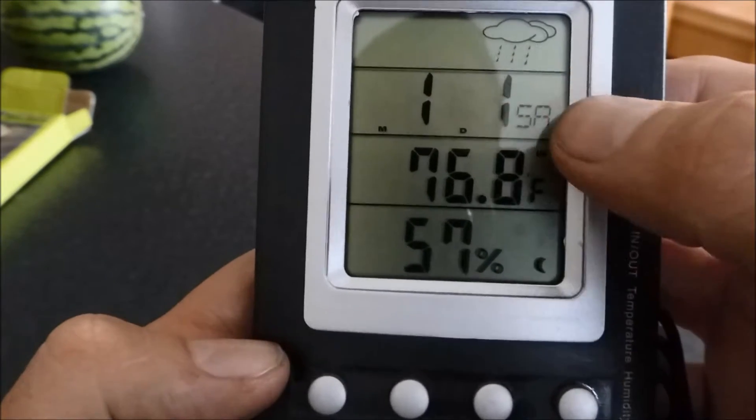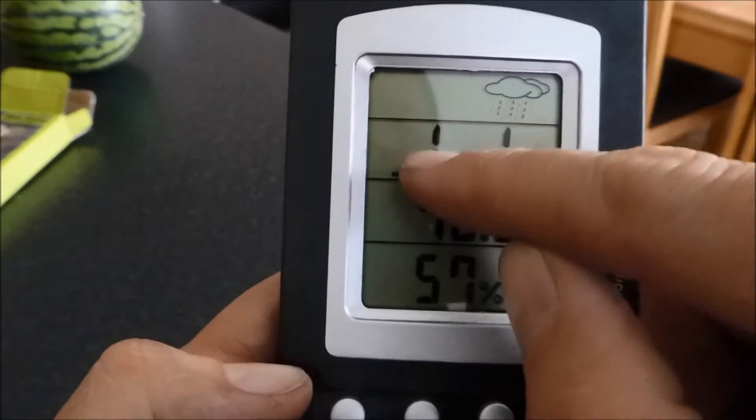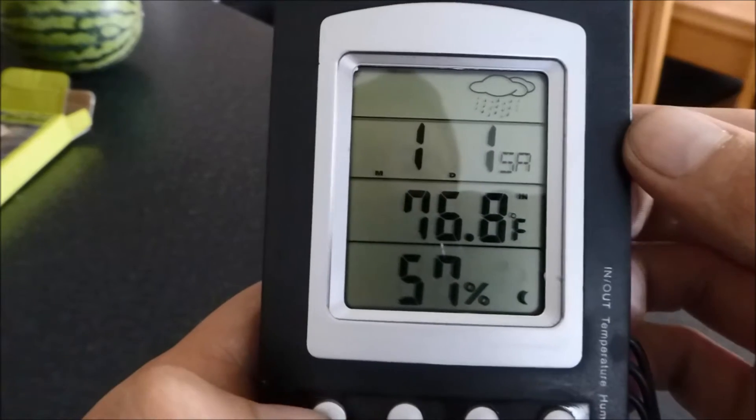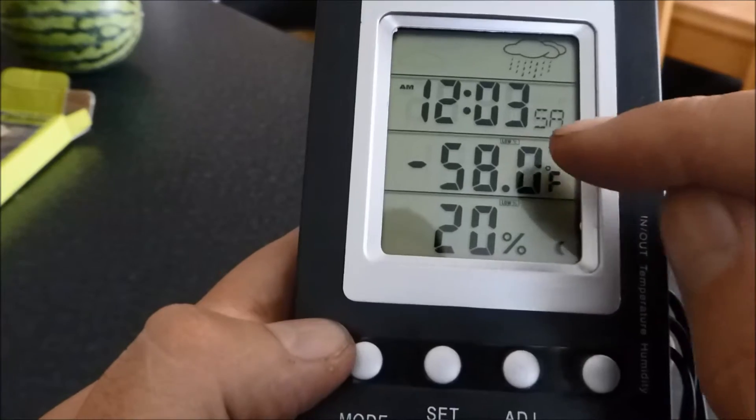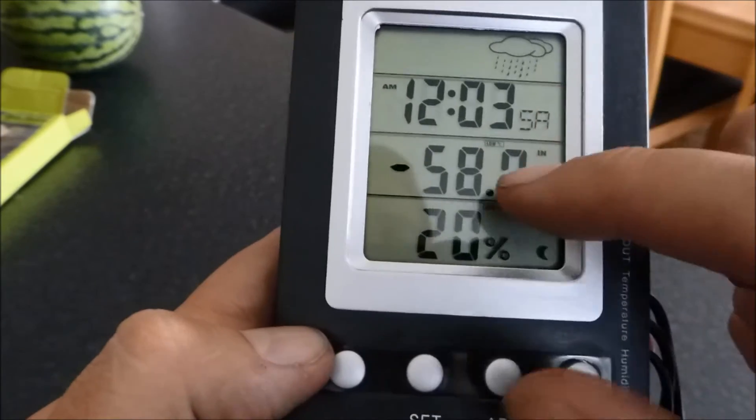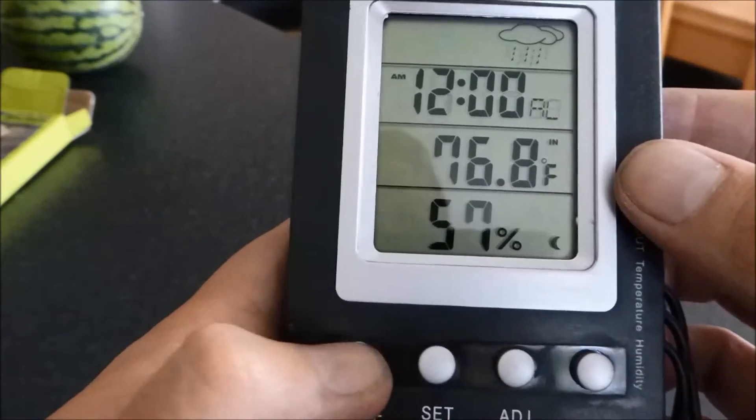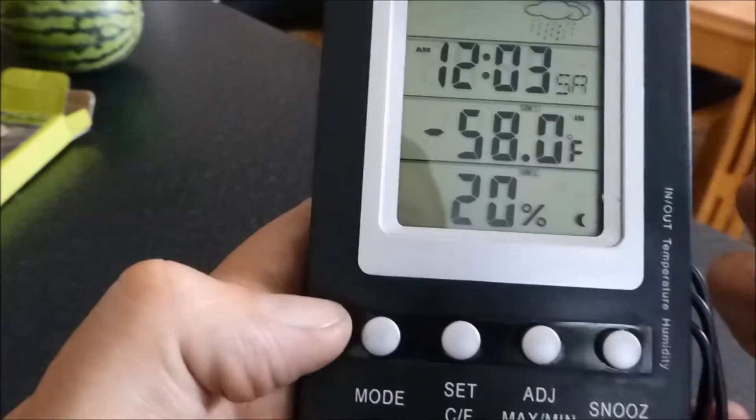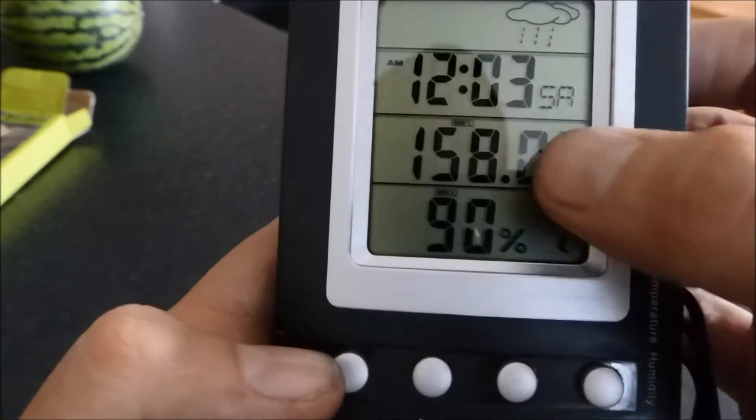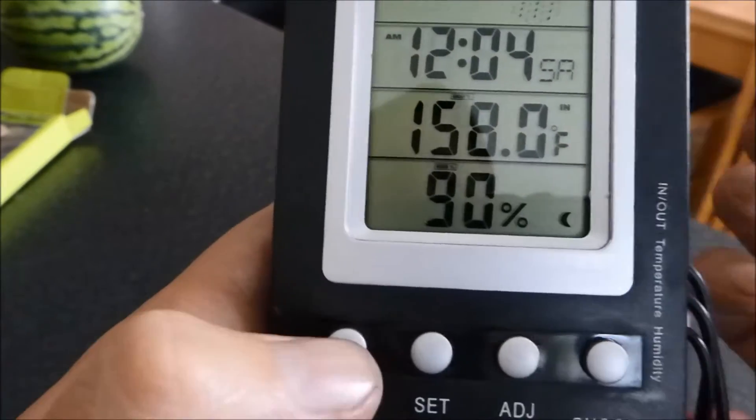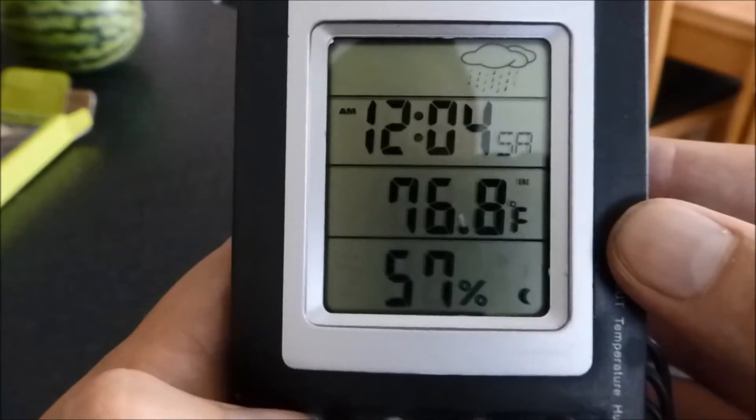So press again, you get, it's in American format, so you've got month and date. Press again, and this shows your low alarms. So you've got, if this probe sends minus 58 degrees, the alarm would go, 20% humidity, the alarm would go. Press again, you've got highs of 158 and 90. These are all changeable for your custom, for whatever you need for your vivarium.